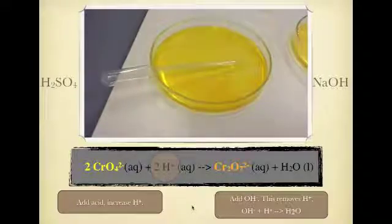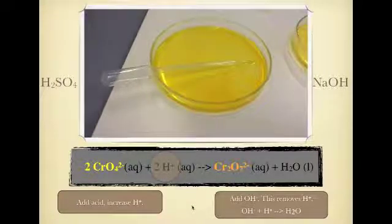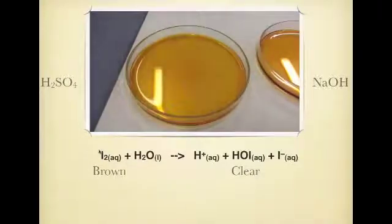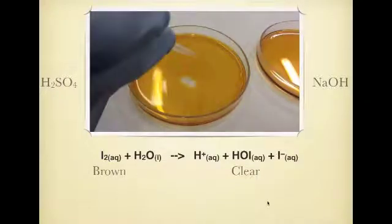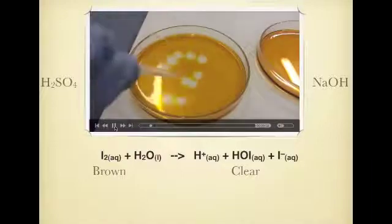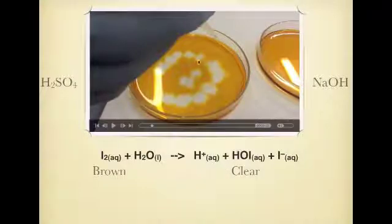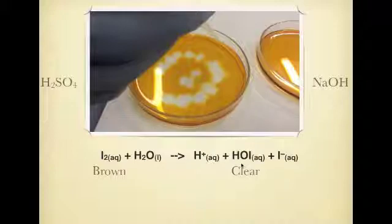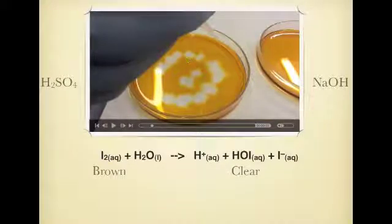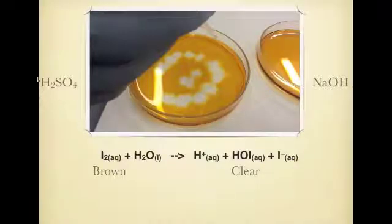Moving on to our next experiment, demonstration, is our iodine reaction where we have our brown iodine, and that's in equilibrium with this clear solution, which is HOI. Now, what I want to talk about is what we're doing here. Obviously, we've got the addition of something with our pipette, and it's becoming clear. Is this going to be sodium hydroxide, or is this going to be sulfuric acid?